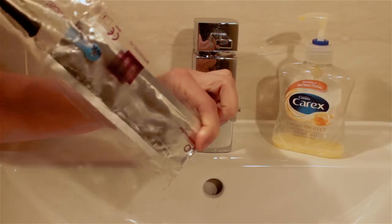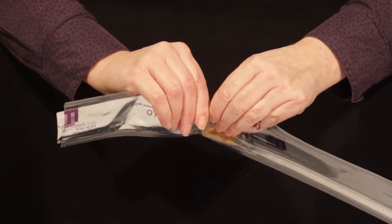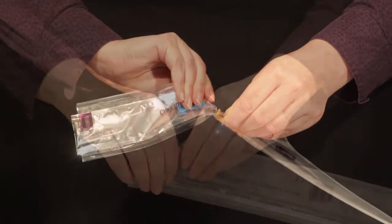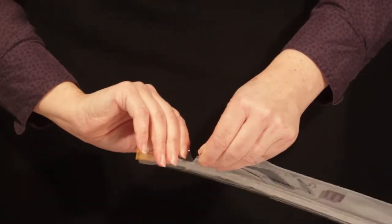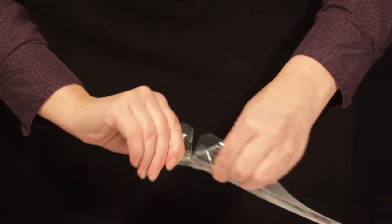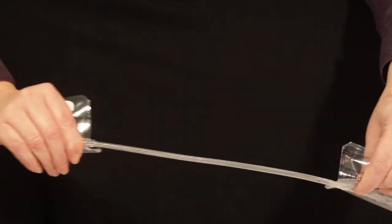Empty the water from the sleeve. Tear off the compartment containing the water sachet. Then tear the sleeve at the next perforation to provide a non-touch technique.